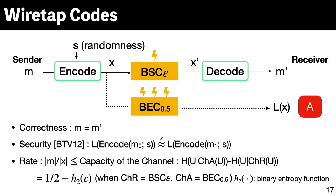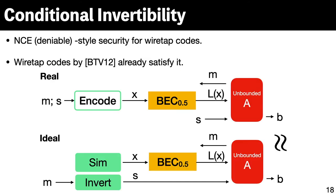In this work, we define a new security definition for wiretap codes. We call it conditional invertibility. This is a non-committing or opening-style security for wiretap codes. In the real experiment, the adversary receives not only partial information of the codeword L(X), but also the randomness S used in the encoding algorithm. In the ideal experiment, the codeword X is simulated to preserve the message M, and the invert algorithm outputs randomness S which is consistent with the message. Since wiretap codes are an information-theoretic primitive, the adversary can be unbounded. We show that existing wiretap codes satisfy this security notion.